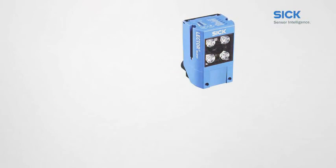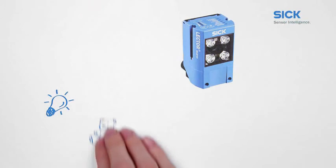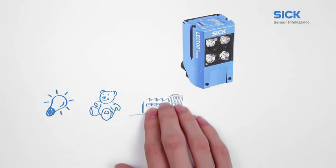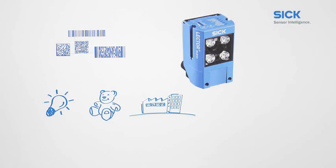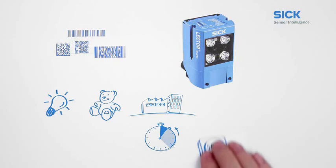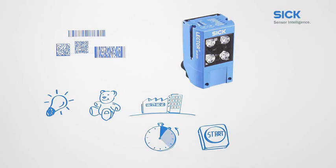The new Lector 620 code reader. Clever. Simple. Industrial. Extremely reliable for all code types and under the most difficult conditions. With simplest possible operation and industrial compatible integration, never before has so much performance been seen in such compact housing.